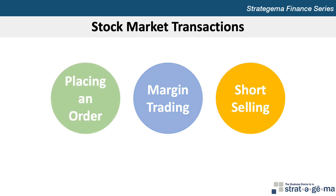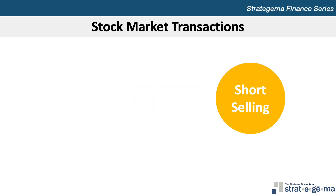In a short sale, investors place an order to sell short a stock they don't own in anticipation of a decline in price. When they sell short, investors essentially borrow the stock from another investor through a brokerage firm and ultimately have to return that stock. If the price declines by the time the short sellers purchase it in the market, the short seller earns the difference between the initial selling price and the price paid to obtain the stock. Short sellers must also make payments to cover dividend payments. After subtracting any dividend payments made, the short seller's profit is the difference between the original selling price and the price paid for the stock.